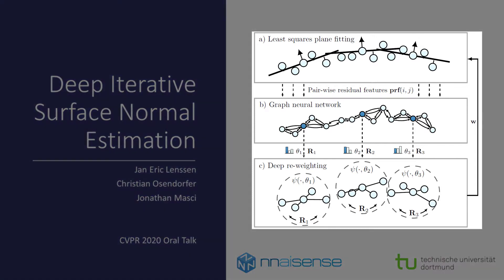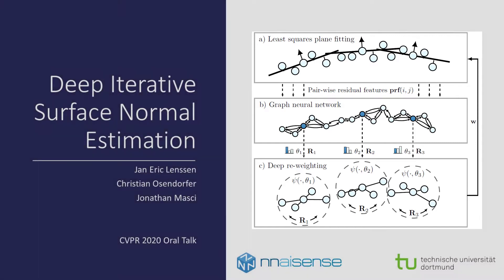In the presented approach, traditional iterative least squares plane fitting is combined with a deep graph neural network for reweighting, leading to a method that utilizes problem-specific knowledge in deep learning.